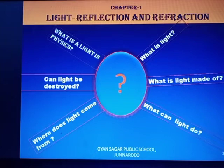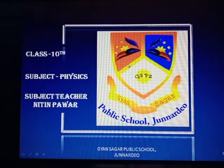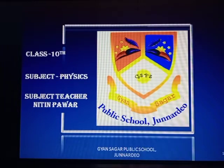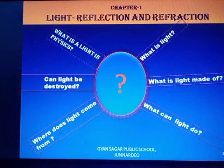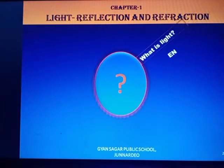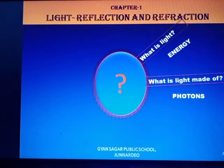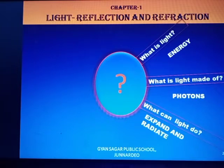Hello students, today we will start our first chapter of light — reflection and refraction. We will start from some questions related to light, like: what is light? Can light be destroyed? Our first question: what is light? Definitely, light is a form of energy. What is light made of? Light is made of photons. What can light do? Light can radiate energy.